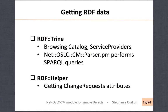To get RDF data, I'm using two CPAN modules — RDF::Trine to browse through the catalog and the service provider's data, and I'm just performing some SPARQL queries. To browse through the change request attributes, I'm using RDF::Redland, called RDF Helper. That's quite useful and it allows you to handle RDF data more easily.